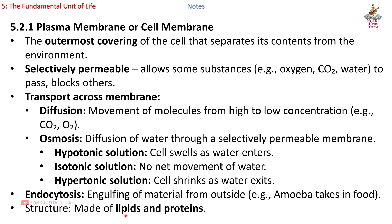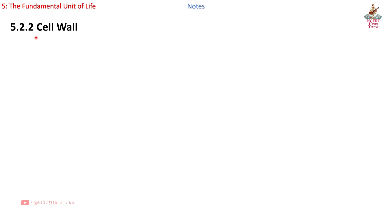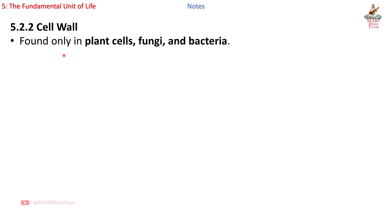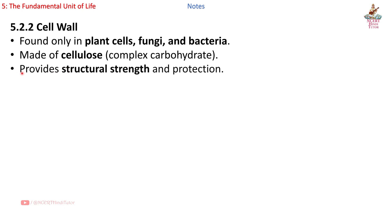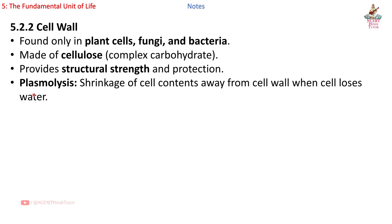Structure of plasma membrane: made of lipids and proteins. Section 5.2.2: Cell wall — found only in plant cells, fungi, and bacteria. Made of cellulose, a complex carbohydrate. Provides structural strength and protection. Plasmolysis: shrinkage of cell contents away from cell wall when cell loses water.